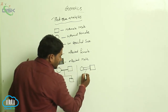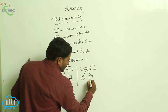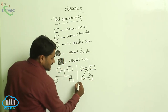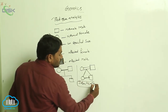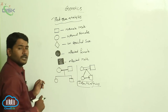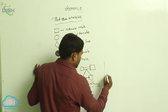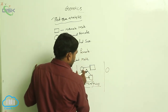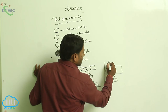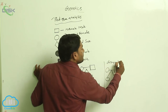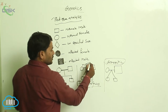When individuals are connected in this way, these two are identical twins — monozygotic twins, meaning the twins are formed from a single zygote. The other symbol represents dizygotic twins, which are non-identical twins.